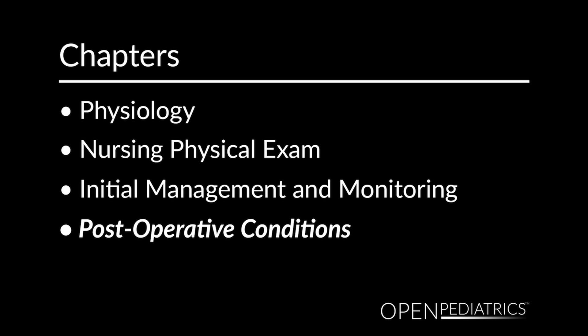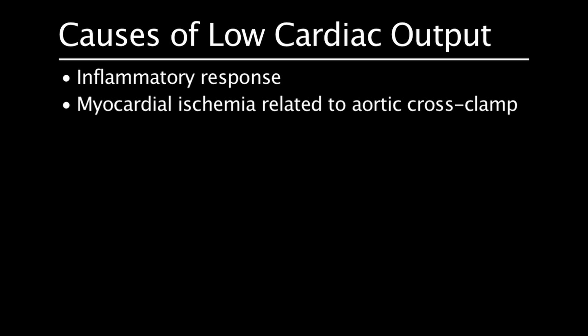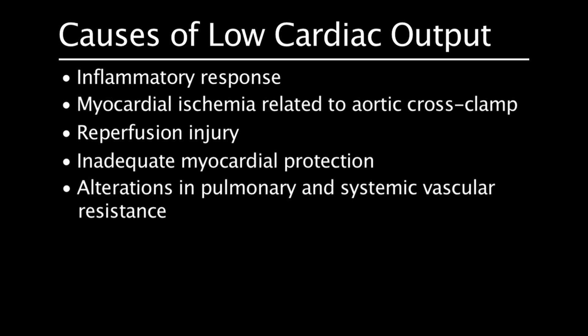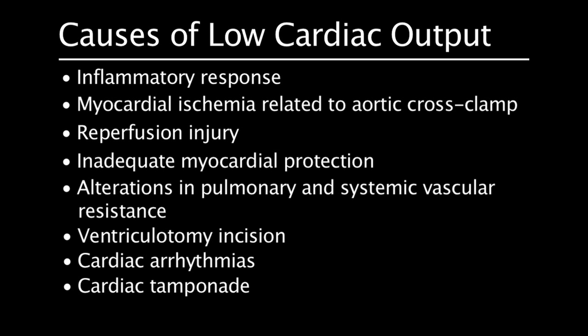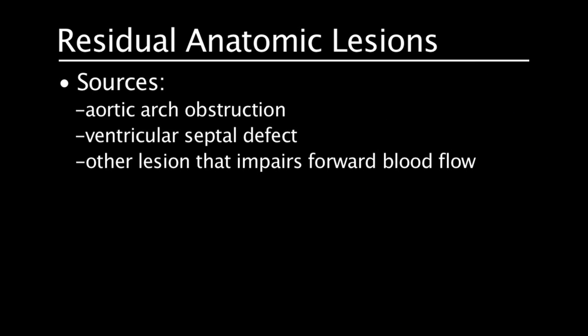Post-operative conditions. Causes of low cardiac output after cardiac surgery include factors related to cardiopulmonary bypass: the inflammatory response, myocardial ischemia related to aortic cross clamp, reperfusion injury, inadequate myocardial protection, alterations in pulmonary and systemic vascular resistance, and ventriculotomy incision. Other factors include cardiac arrhythmias, cardiac tamponade, and residual cardiac lesions. If a patient presents with signs of low cardiac output, residual anatomic lesions should be ruled out, including aortic arch obstruction, a ventricular septal defect, or any other lesion that may impair forward flow of blood through the heart and out of the aorta.